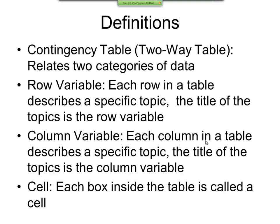A row variable - each row in a table describes a specific topic. The title of the topics is the row variable. Column variable - each column in a table describes a specific topic and the title of the topics is a column variable. And cell - each box inside a table is called a cell.